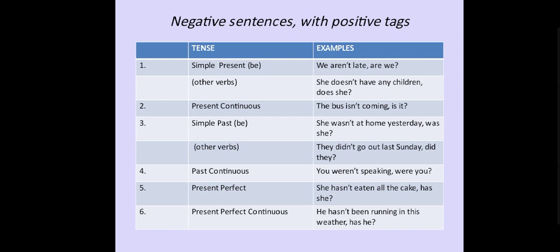Now, negative sentences with positive tags. Simple present tense with 'be' verb — 'We are not late, are we?' Other verbs — 'She does not have any children, does she?' Present continuous — 'The bus is not coming, is it?' Simple past — 'She was not at home yesterday, was she?' Other verbs — 'They did not go out last Sunday, did they?' Past continuous — 'You were not speaking, were you?' Present perfect — 'She has not eaten all the cake, has she?'